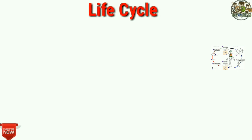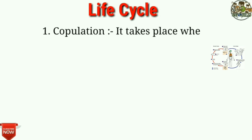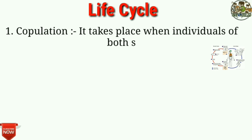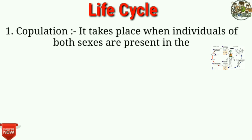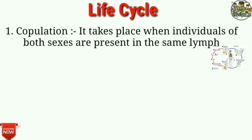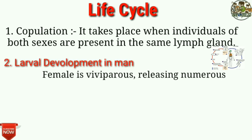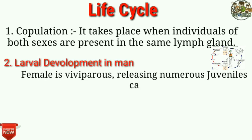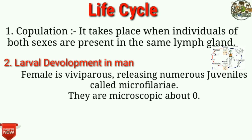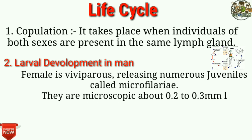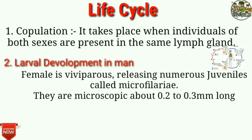Life cycle: Copulation takes place when individuals of both sexes are present in the same lymph gland. The female is viviparous, releasing numerous juveniles called microfilariae. They are microscopic, about 0.2 to 0.3 mm long.